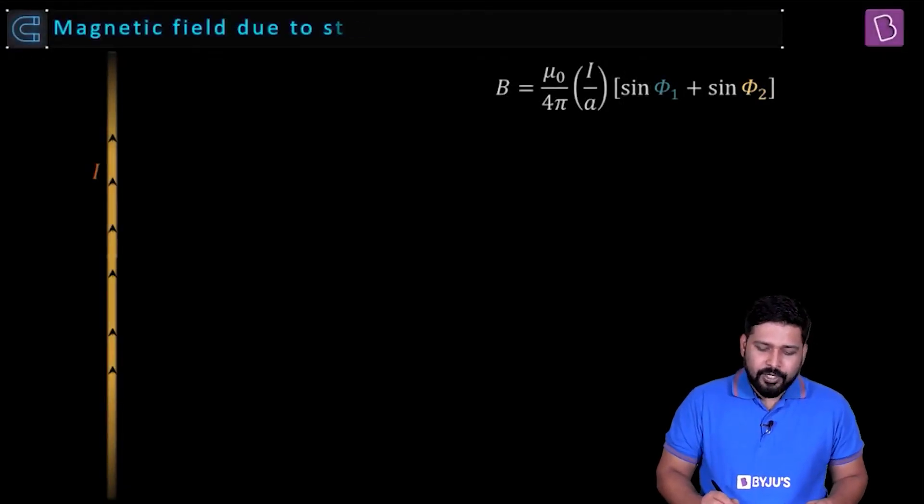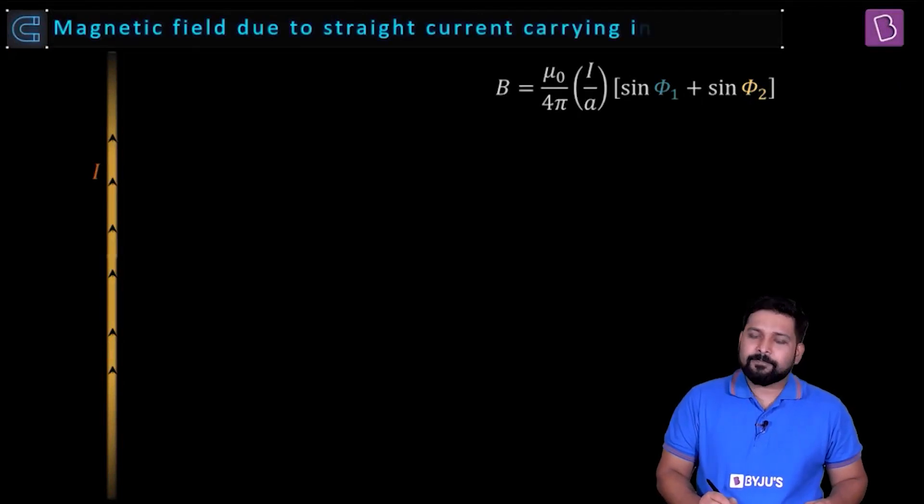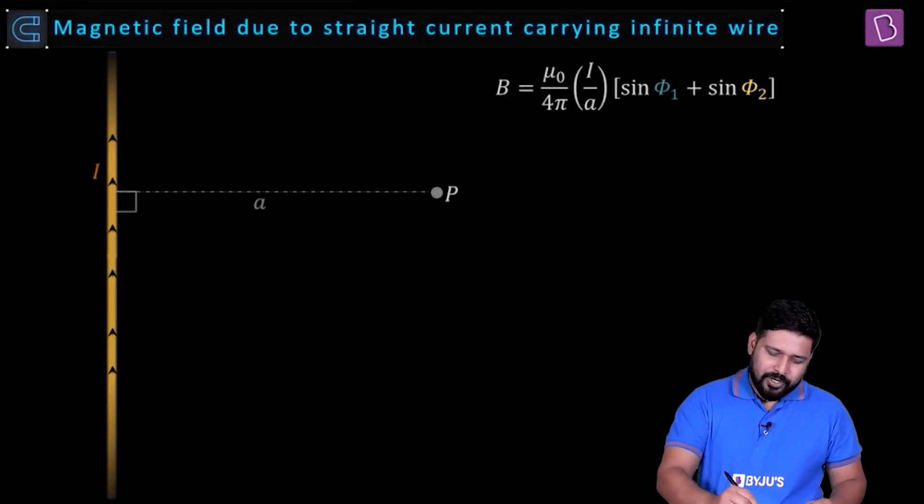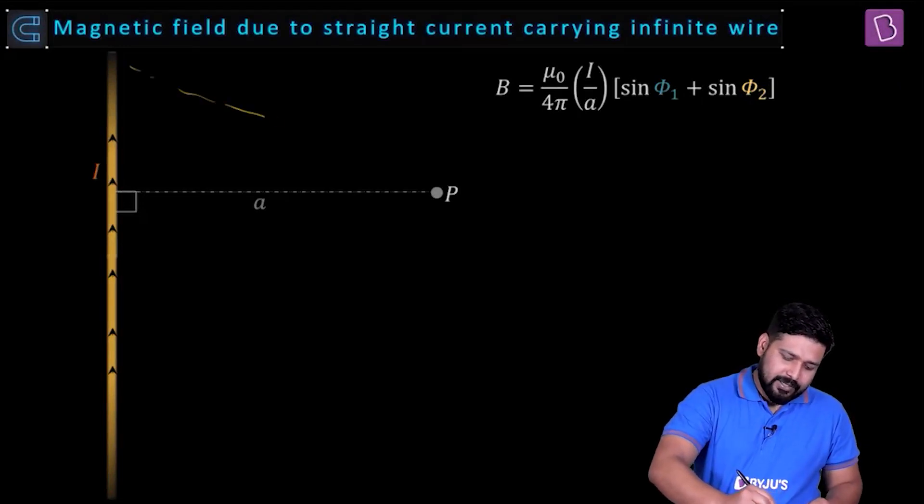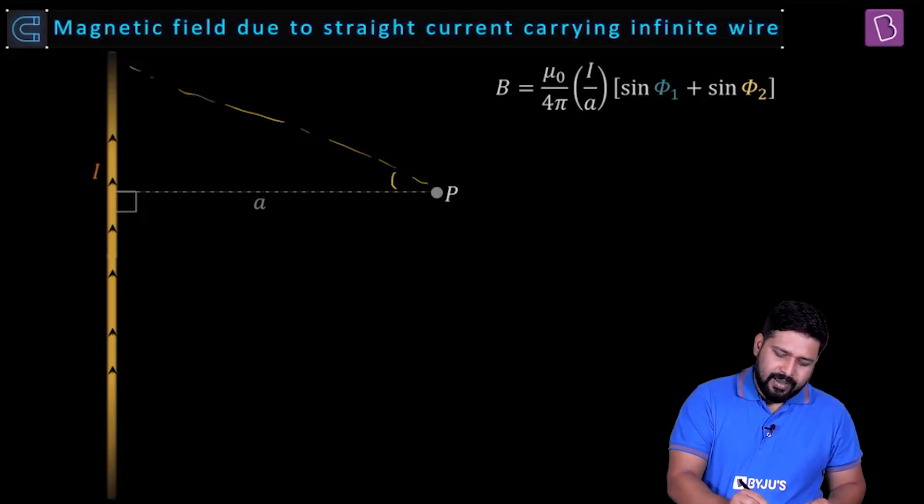Find the magnetic field due to a straight conductor carrying current, and this conductor is extending up to infinity. Think about it. When the conductor was of this length, we had some value phi 1, we had some value, let's say phi 2.